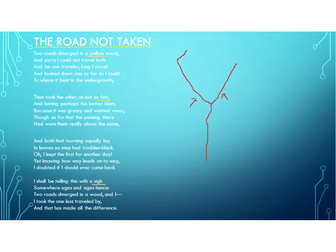Two roads diverged in a yellow wood. So what on earth is a yellow wood? Well, I can think of a couple of different things. One, it might be autumn and the leaves might be yellow, so he's calling it a yellow wood — which would lead you to wonder why he's talking about doing this in autumn. Or it could be just a very sunny day and the yellow sun is lighting the woods. Those seem to me the two most likely possibilities. Maybe he just wants to paint a picture — that's okay too. So we'll just read on.